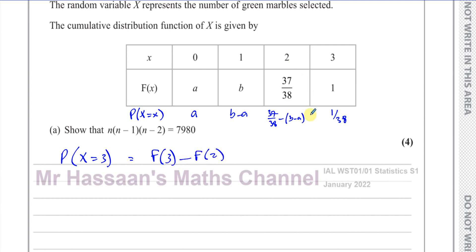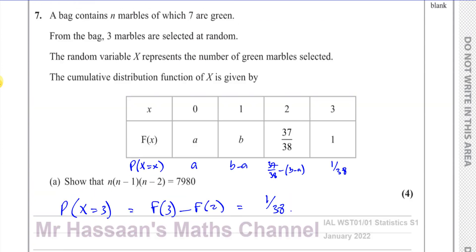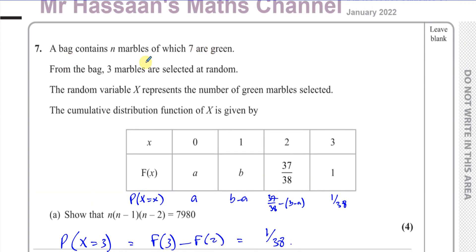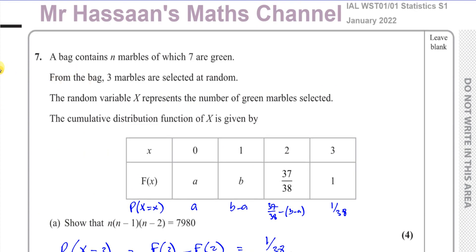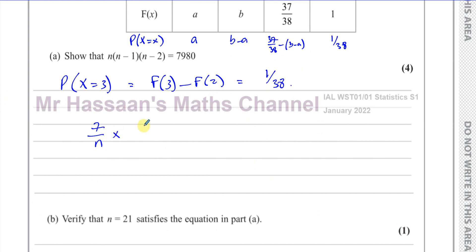We can deduce from this table that P(X=3) = F(3) − F(2), which is 1/38. So the probability of picking three green marbles, with 7 green out of n total, is 7/n × 6/(n−1) × 5/(n−2), and that equals 1/38.